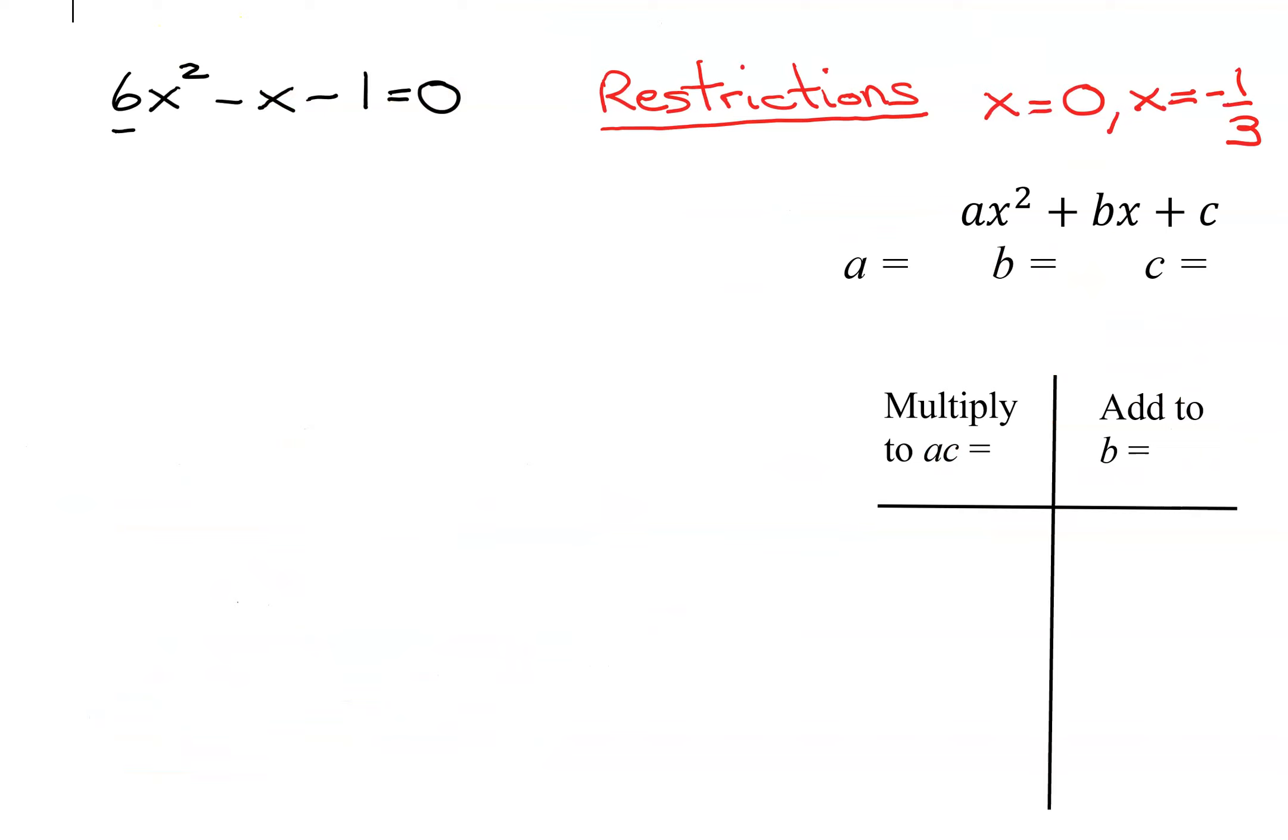So I've written my quadratic equation here that's ready to factor. And so now what's the value of a? a is the coefficient of the x squared. It's 6. b is the coefficient of the x's, so it's negative 1. And c is the constant term, also negative 1. So a times c is 6 times negative 1, which is negative 6.